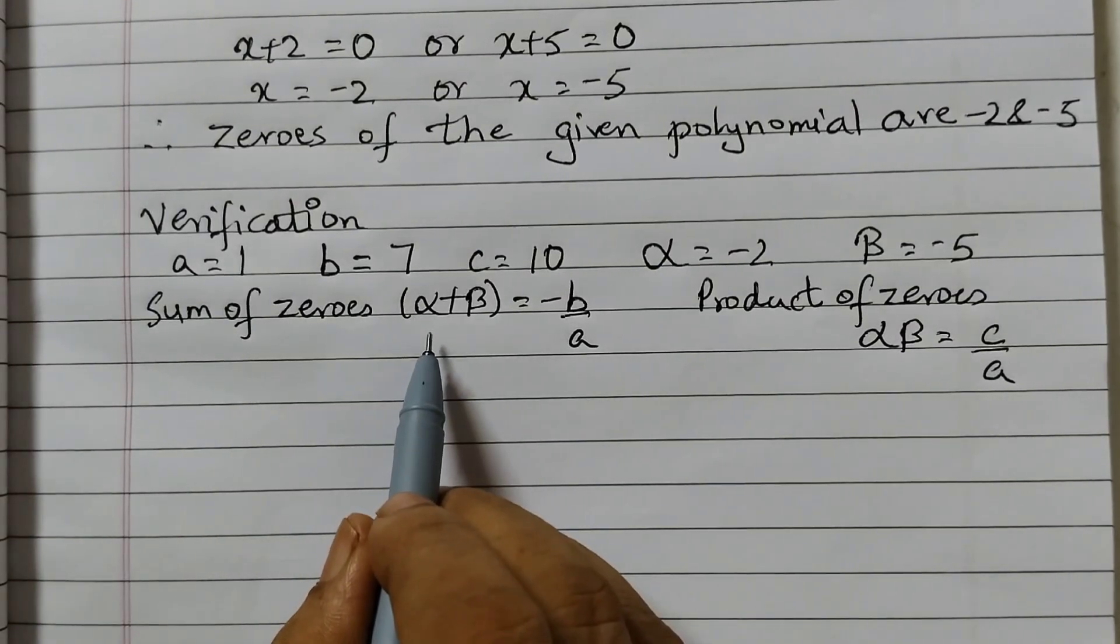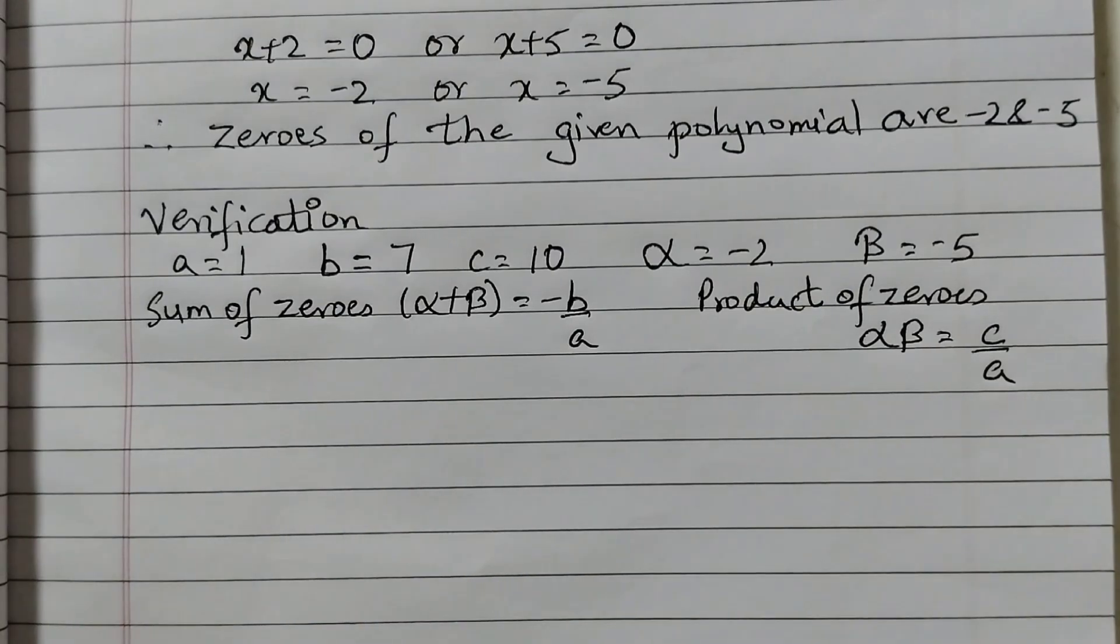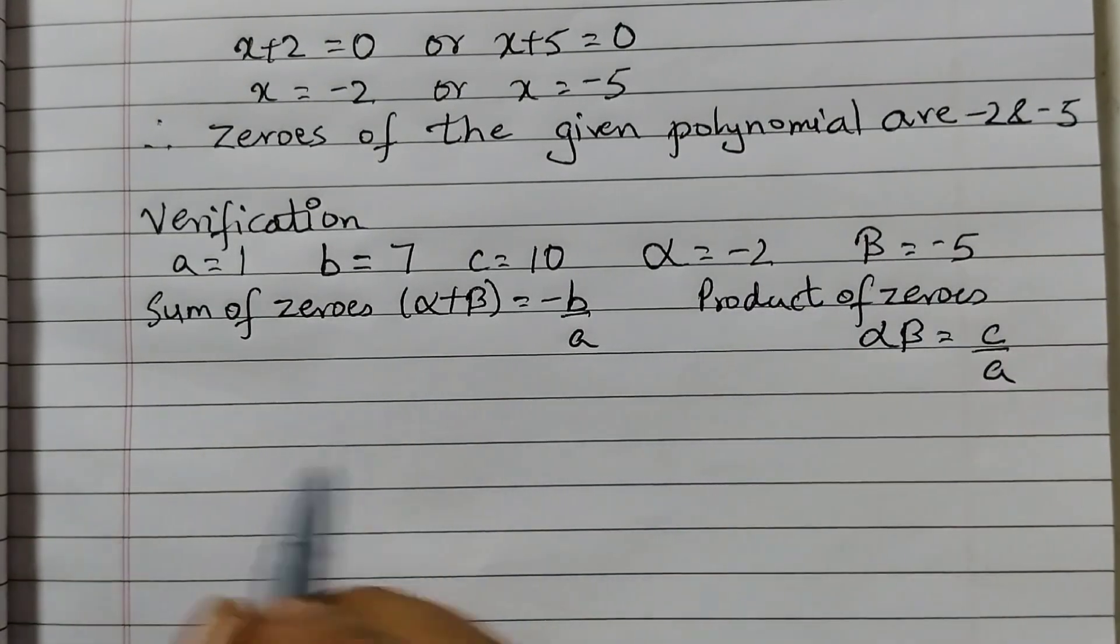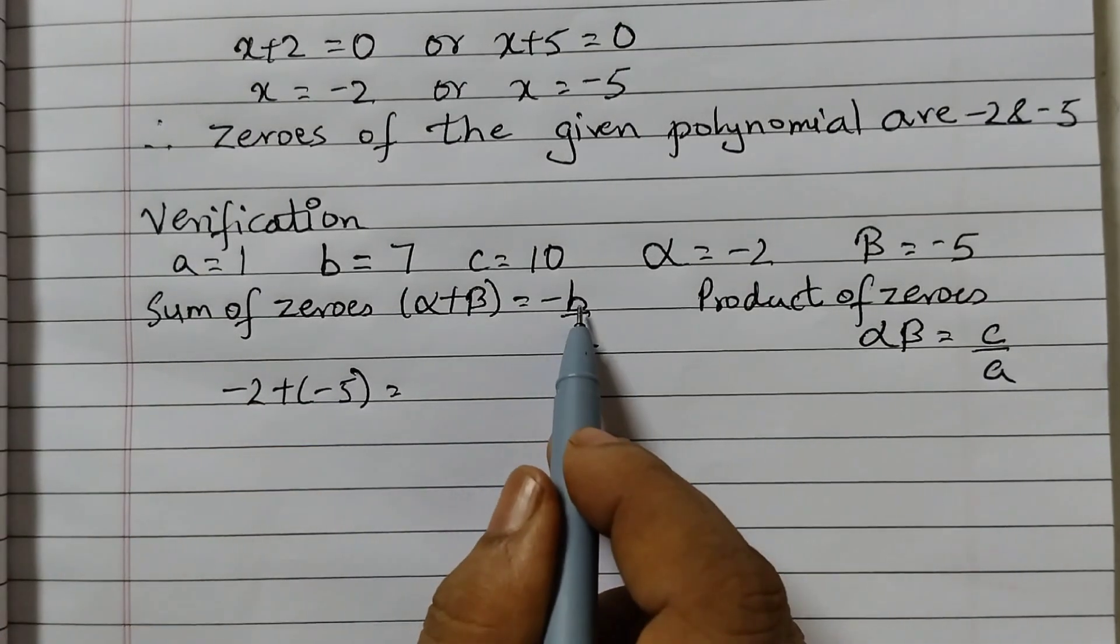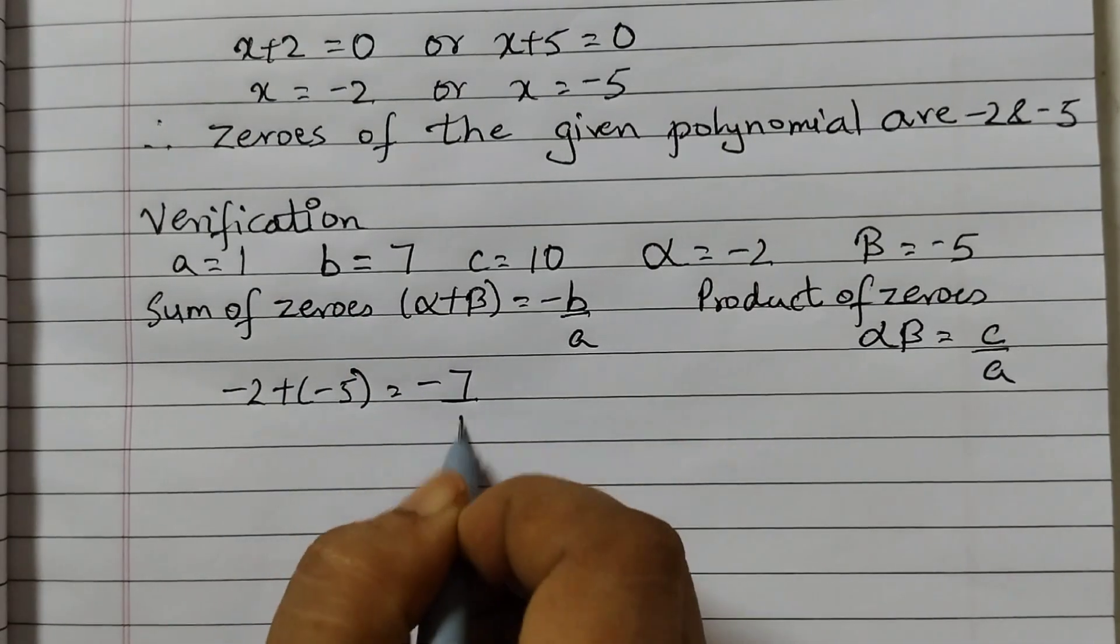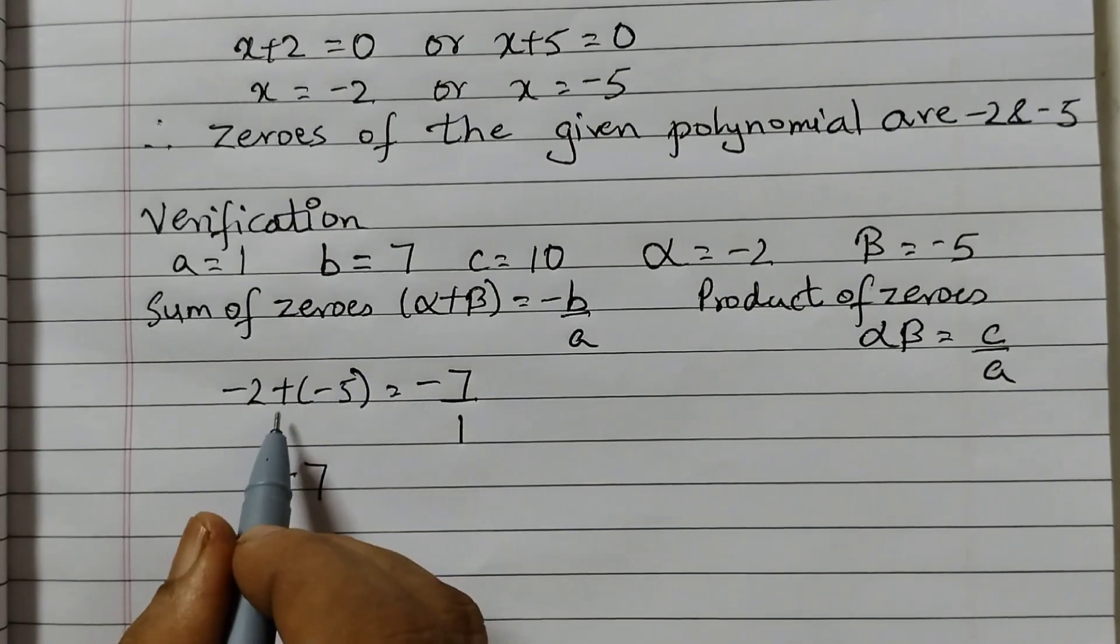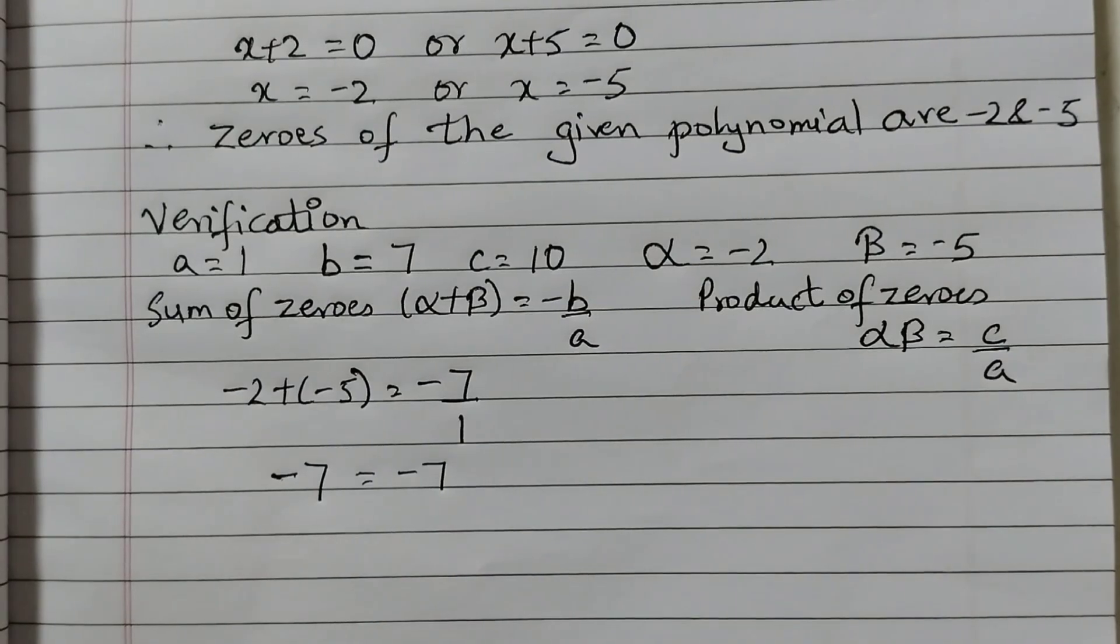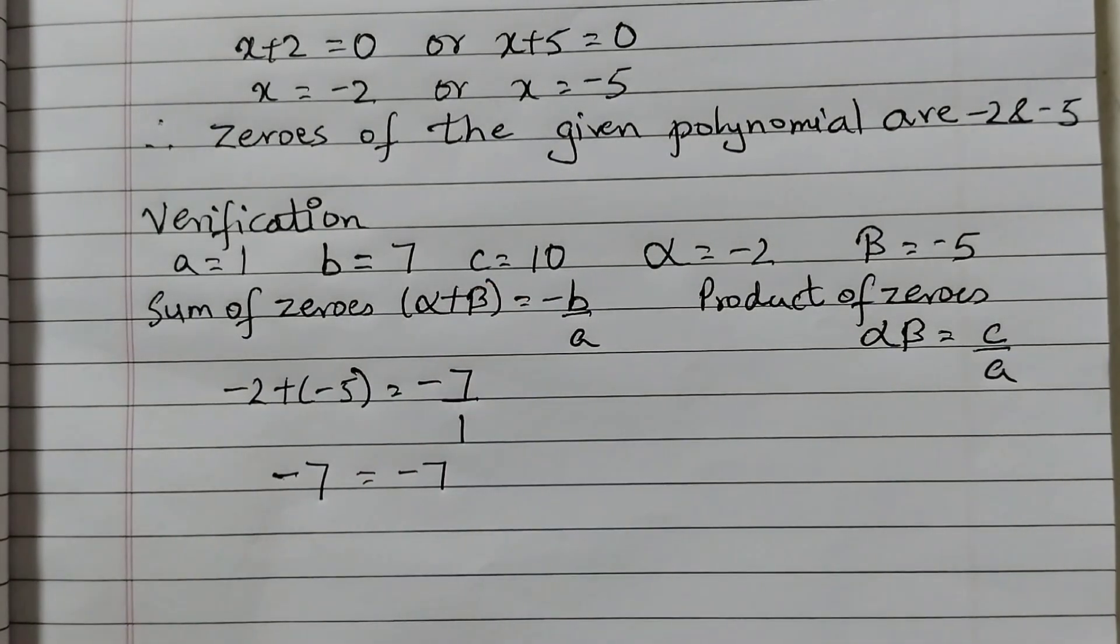If we can prove that this left hand side is equal to right hand side again here left hand side is equal to right hand side then we are verifying the relationship. So alpha plus beta minus 2 minus 5 is equal to minus b by A, minus 7 by 1. Minus 2 plus minus 5 is minus 7, right hand side is also minus 7. So these two are equal, so this is verified.